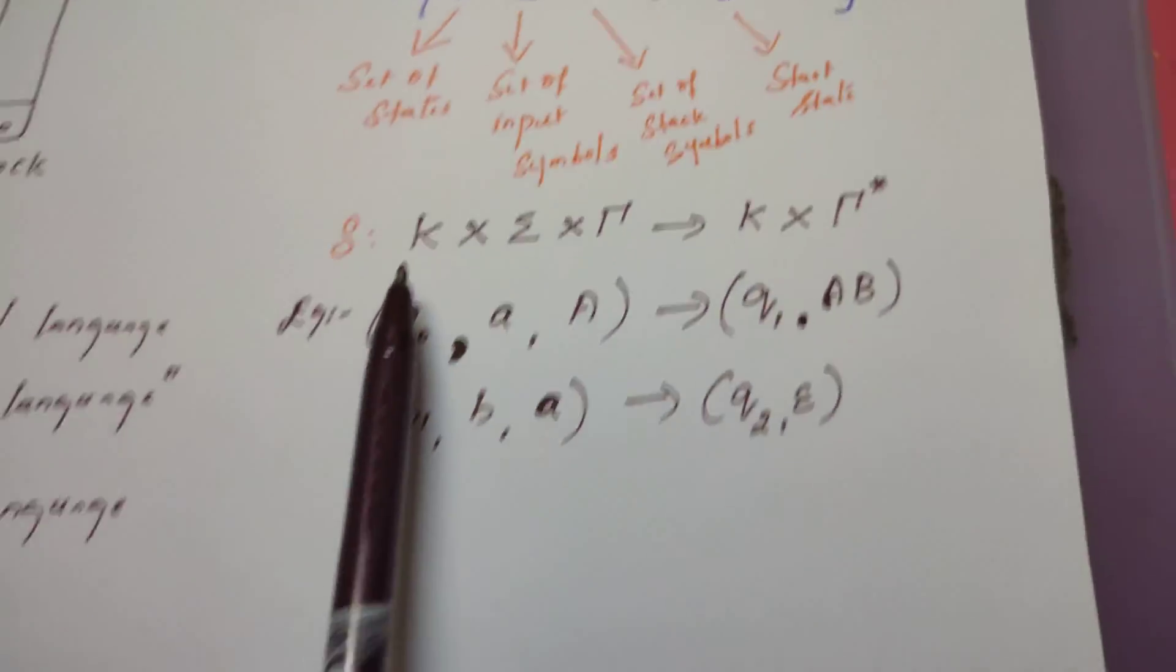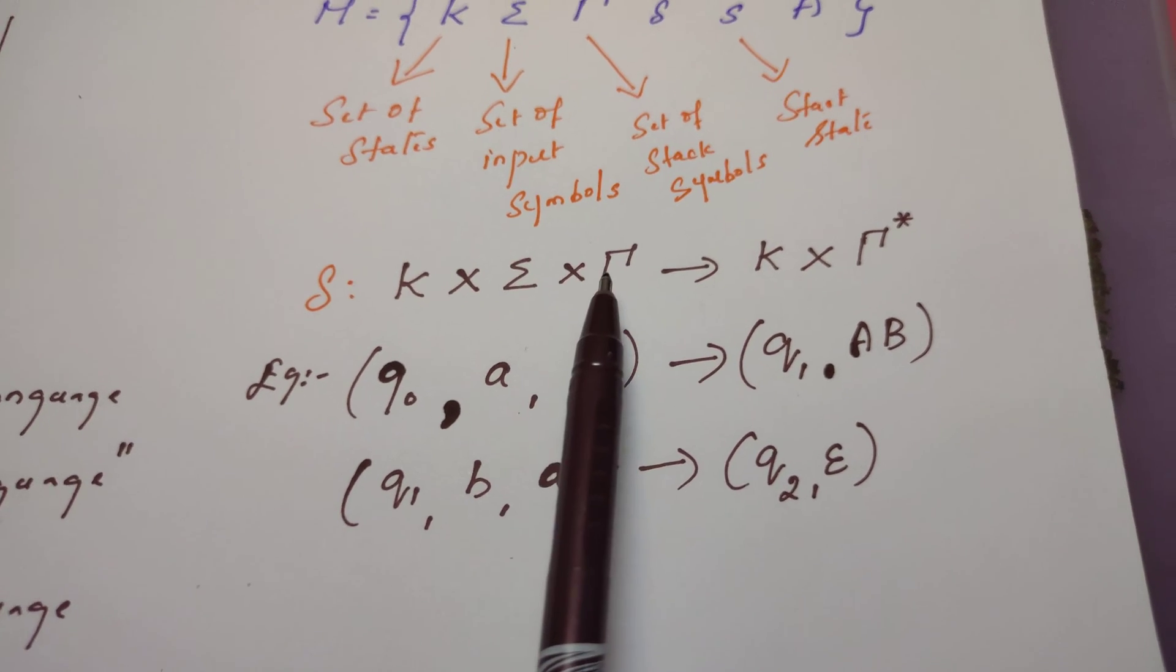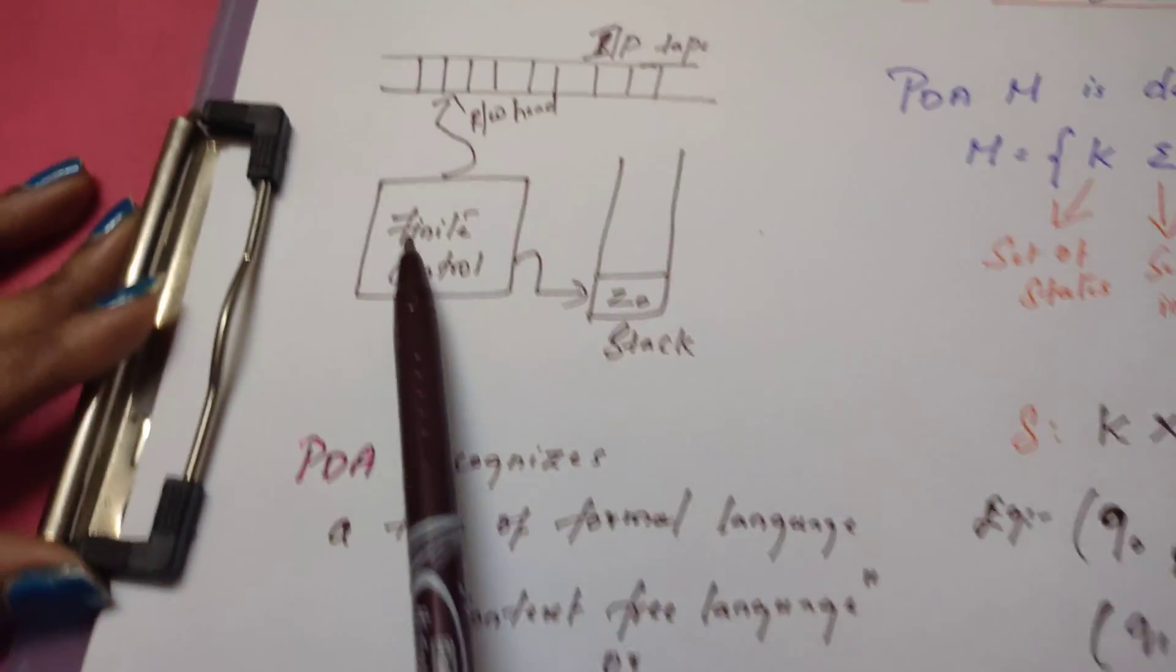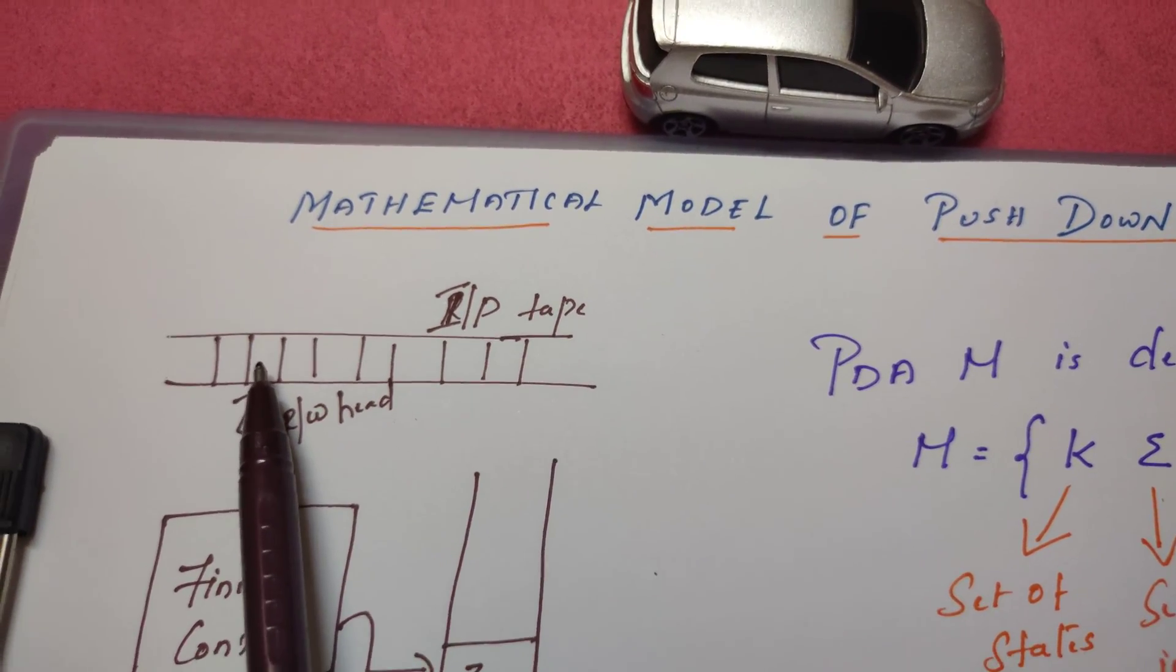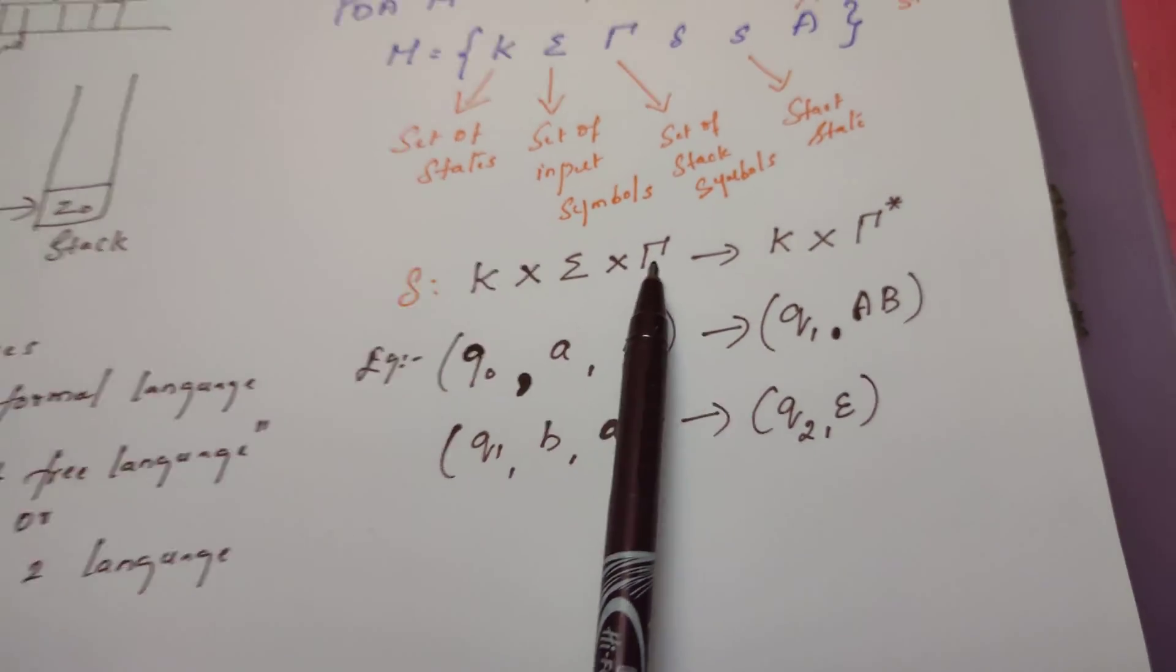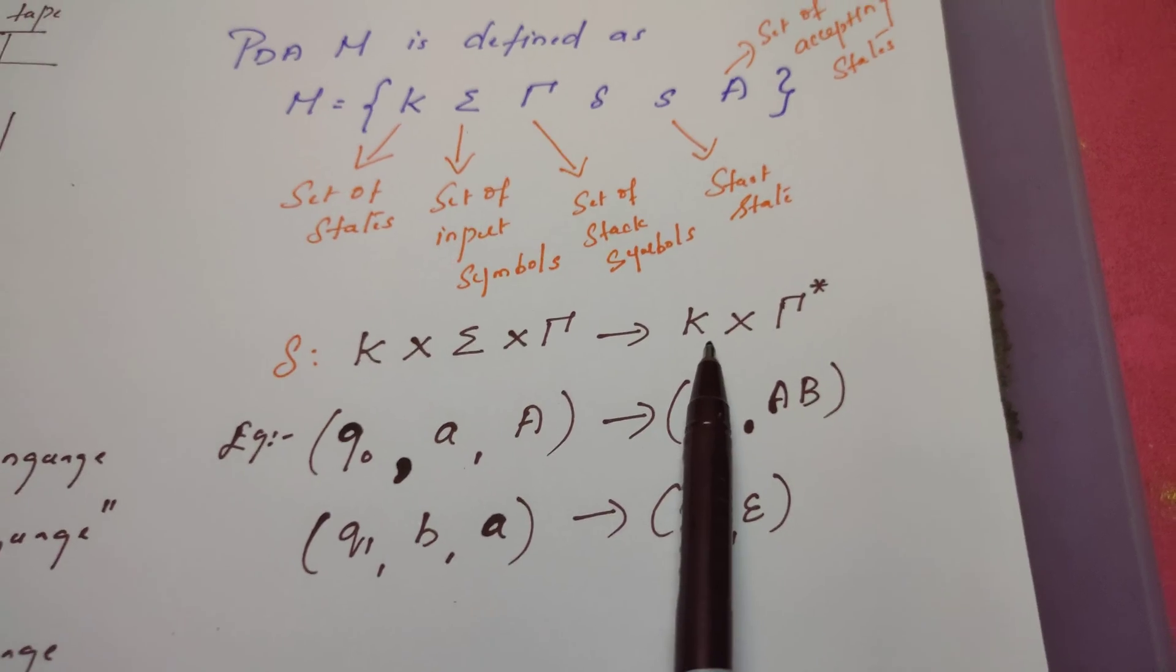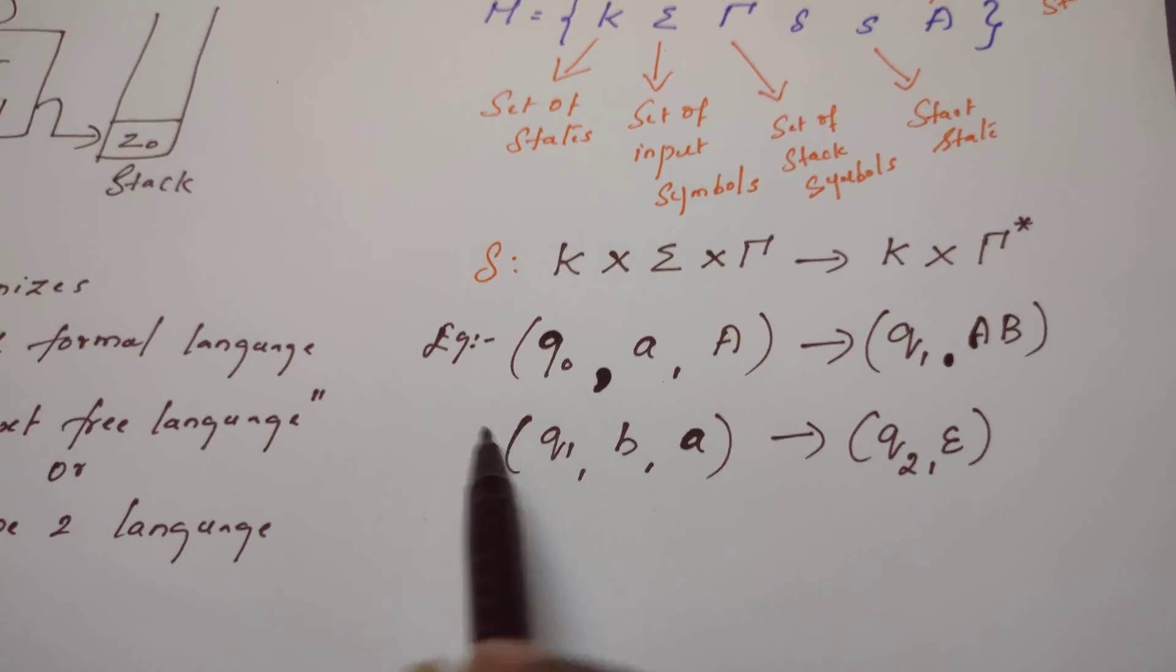Now let us see the transition function. From the given state, on reading the input symbol, it checks what is available at the top of the stack. Let us try to understand from this block diagram. The finite control reads one symbol from the input tape and simultaneously checks what is available at the top of the stack. From the given state, on reading the input symbol and checking the top of the stack, it may change its state by pushing or popping symbols onto the stack. Let us understand this with examples.